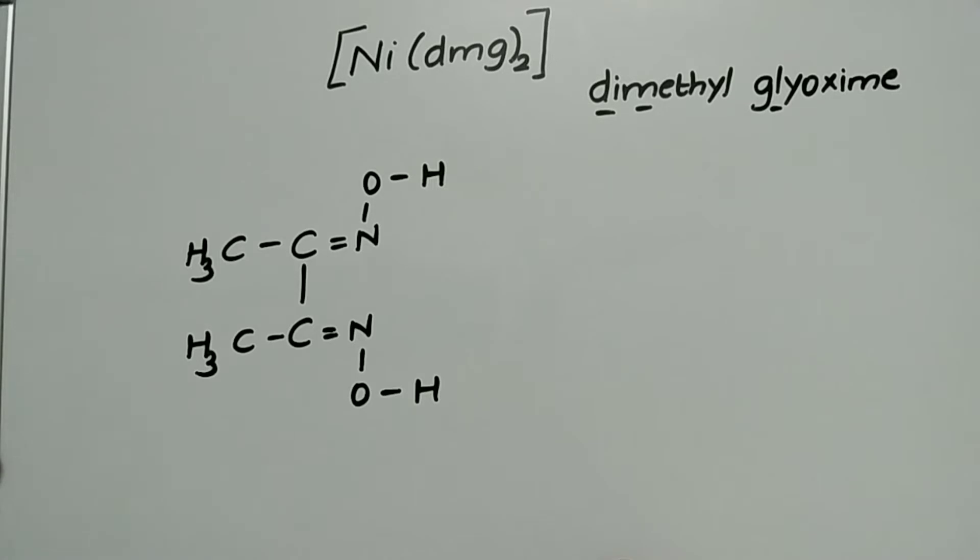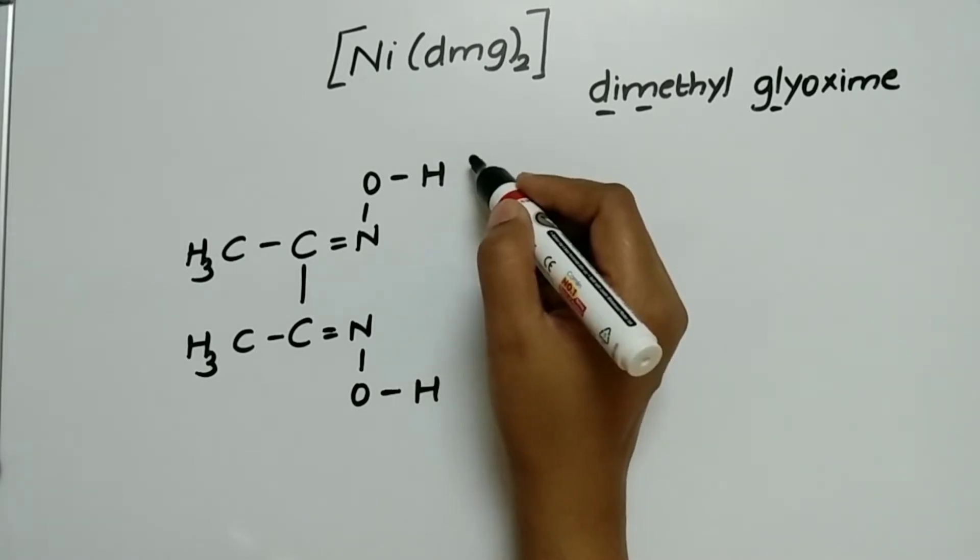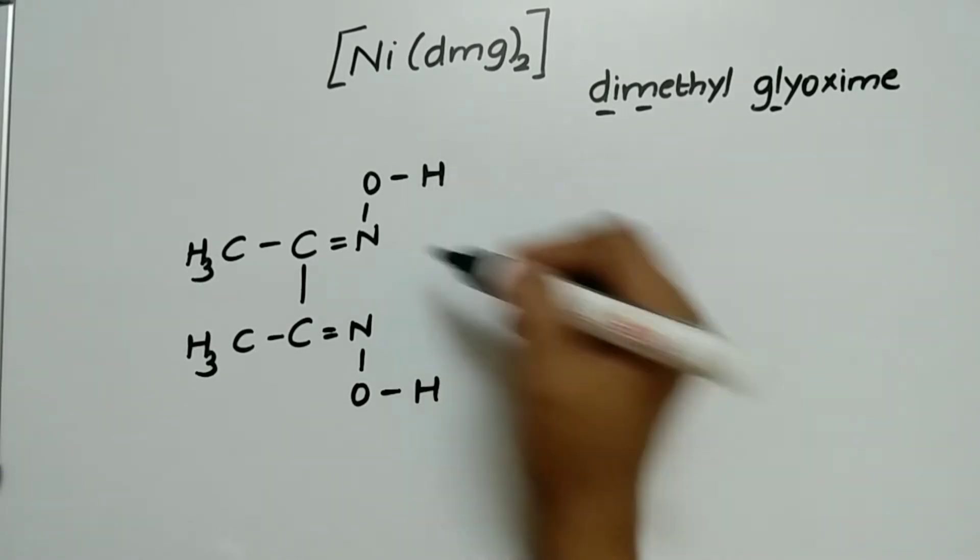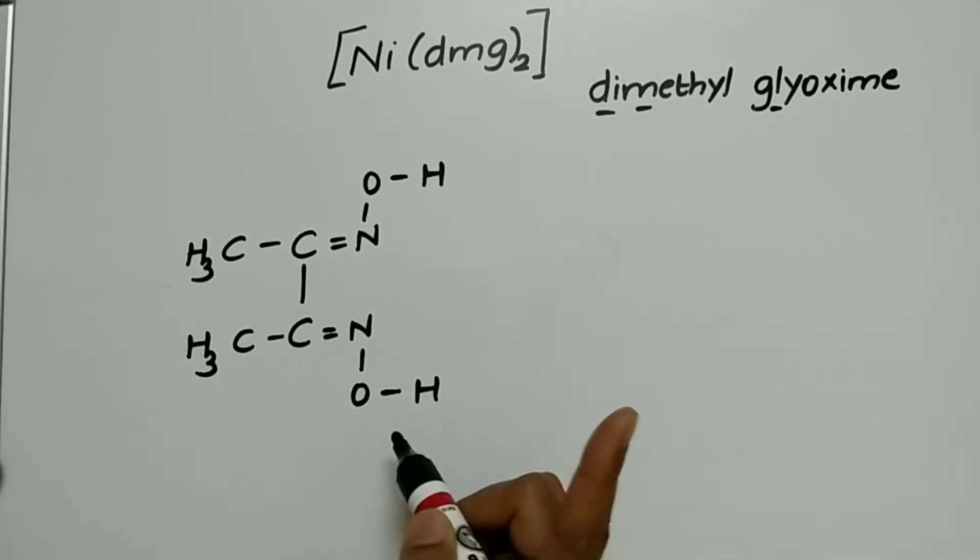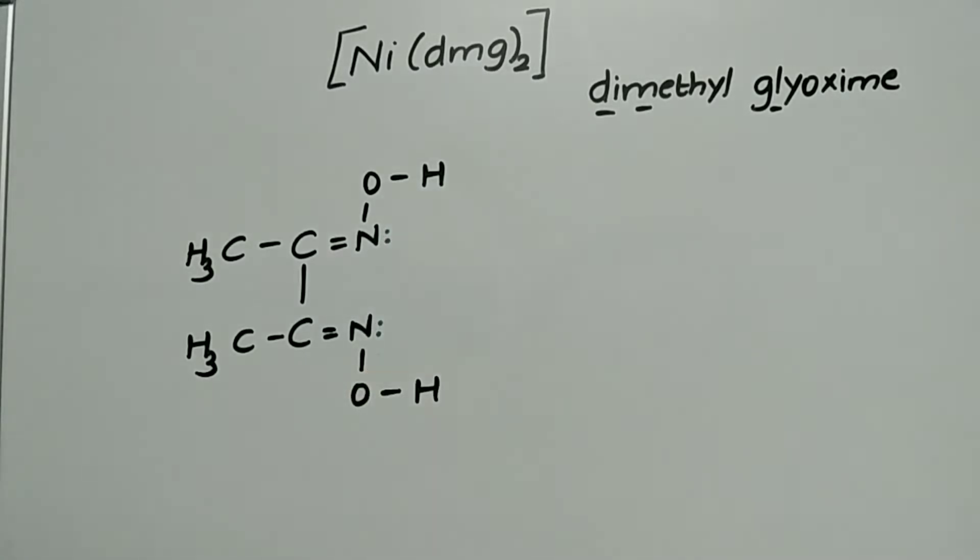If it donates one hydrogen, if one hydrogen is removed from here, what will be the charge? It will get a minus one charge. If one hydrogen is removed it gets minus one charge, and here for nitrogen there are lone pair of electrons also. This is the structure for DMG. It has two acidic hydrogen that means it can be removed. If it removes one hydrogen it gets minus one charge on removal of any one hydrogen.